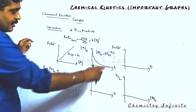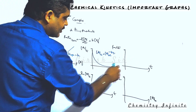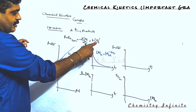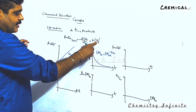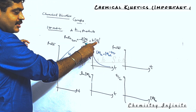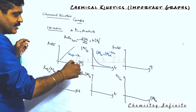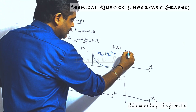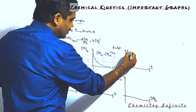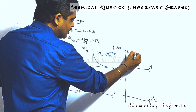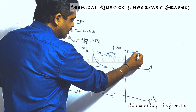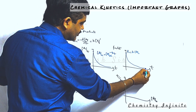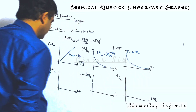Third, rate versus time. Because concentration of the reactant decreases exponentially with time, rate also decreases exponentially with time. The initial rate is k times A₀, and then this rate decreases exponentially with time.